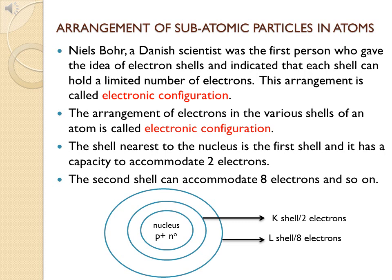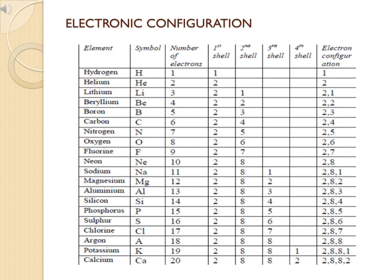The key rule is that we must fill the first shell (K shell) first with two electrons, then the L shell, then M, then N, and so on. This table shows the electronic configuration of elements with atomic numbers 1 to 20 — that is, from hydrogen to calcium — with each element's symbol, number of electrons, and how they are distributed across the various shells.